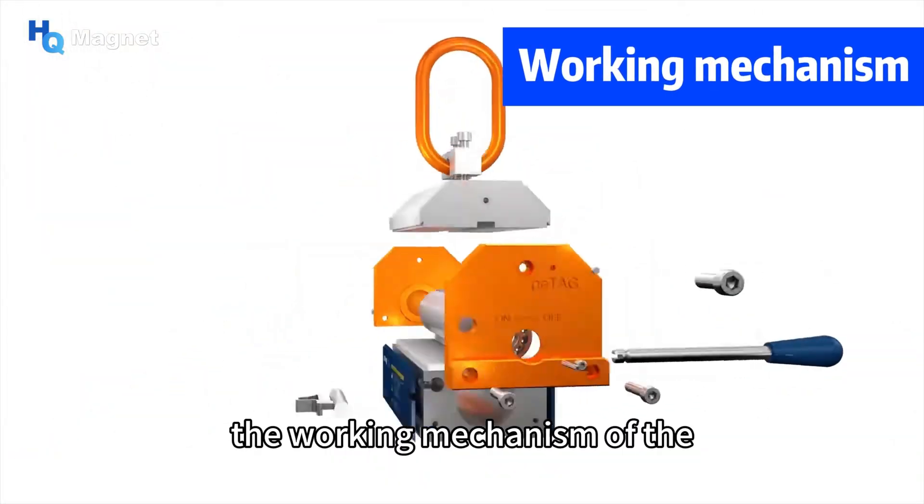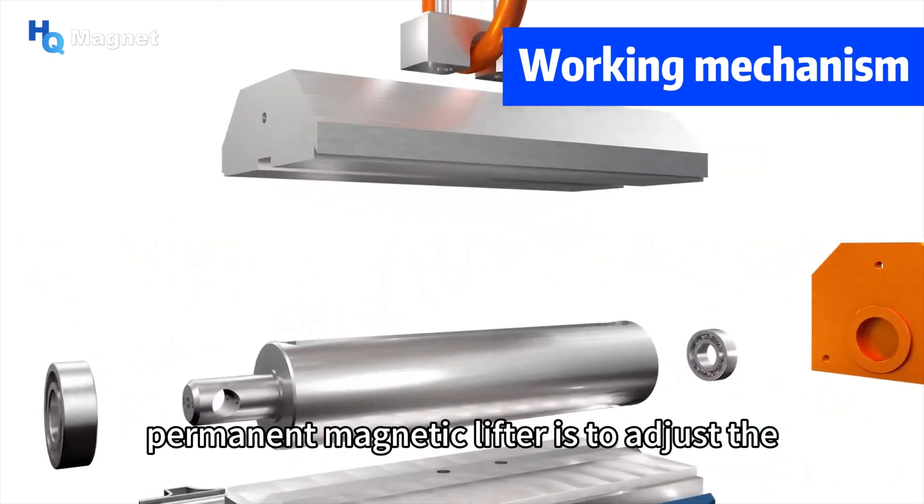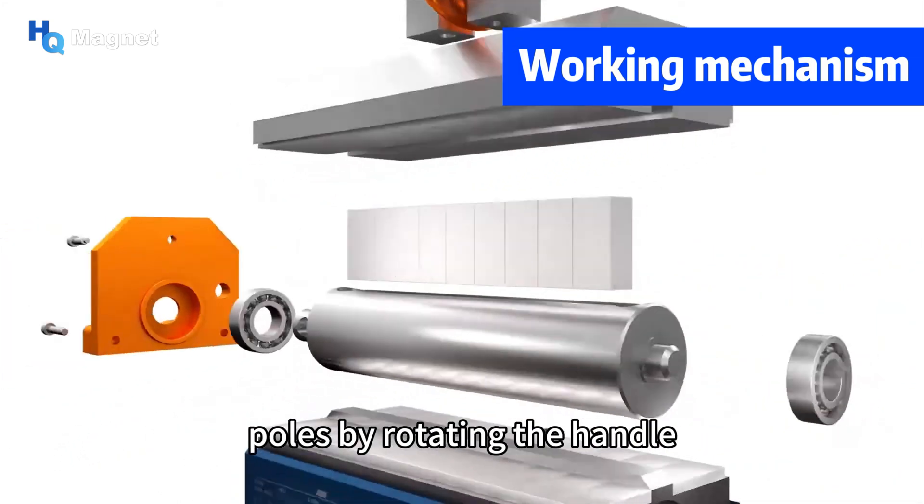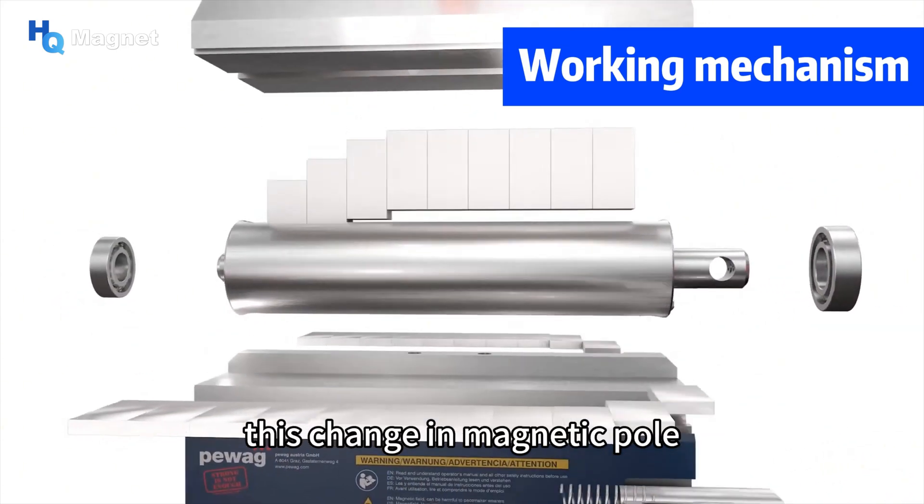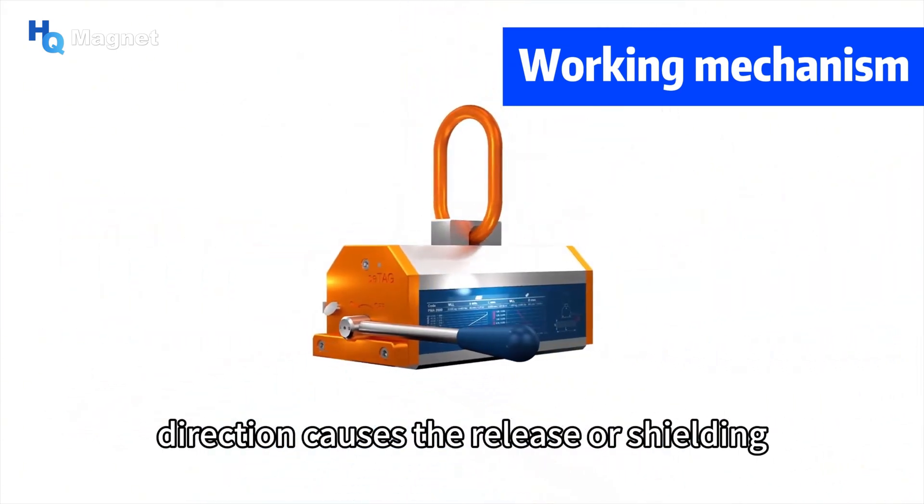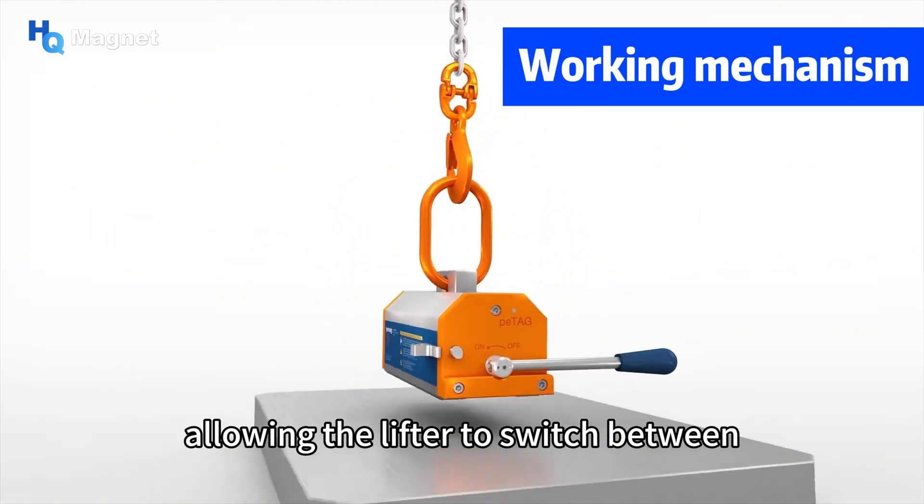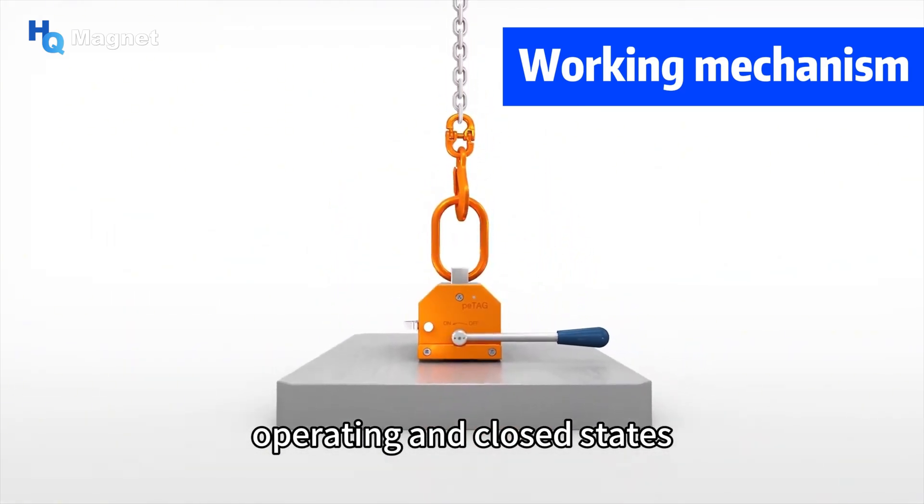The working mechanism of the permanent magnetic lifter is to adjust the direction of its internal magnetic poles by rotating the handle. This change in magnetic pole direction causes the release or shielding of the internal magnetic field, allowing the lifter to switch between operating and closed states.